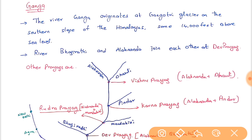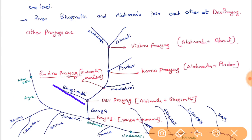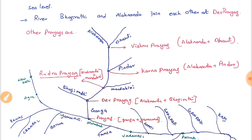Ganga is the longest and largest river flowing in India. It originates at Gangotri Glacier on the southern slopes of the Himalayas at about 14,000 feet above sea level. Ganga starts after Bhagirathi and Alaknanda join at Devprayag. There are multiple prayags — confluence points — which are shown in the diagram provided.